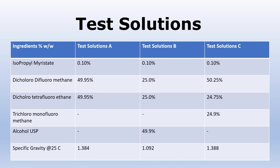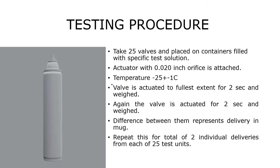Ingredients by weight percentage in test solutions include: isopropyl myristate, dichlorodifluoromethane, dichlorotetrafluoroethane, trichloromonofluoromethane, and alcohol USP. Test solutions A, B, and C are used. Testing procedure: 25 valves are placed on containers, filled with specific test solution, actuator with 0.020 inch orifice is attached, temperature of 25°C is maintained, the valve is actuated to the fullest extent for 2 seconds and then waited. Repeated again for 2 seconds. Difference between them represents delivery in micrograms. This is repeated for a total of 2 individual deliveries from each of 25 test units.